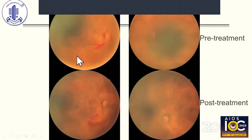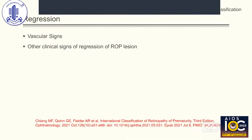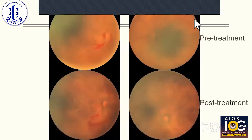This picture shows the treatment of aggressive ROP with anti-VEGF. The inferior two images — post anti-VEGF injection pictures — show that the plus disease has decreased significantly one week following injection. Regression of ROP is well described in the third edition of the ICROP classification. The vascular signs are clearly seen: the dilatation and tortuosity visible in the superior pictures have decreased significantly, indicating regression.